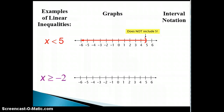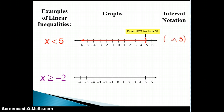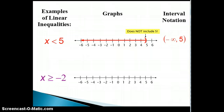The interval notation for this set follows naturally from its graph. You can think of it as naming the range of numbers this set includes. Since it points to the left, we say it goes from negative infinity to 5, but not including 5. We list the left end point first, which in this case is negative infinity, and list the right end point next, separating the end points with a comma. Note that infinity and negative infinity are not actual numbers, so we will always use parentheses next to the infinity symbols.